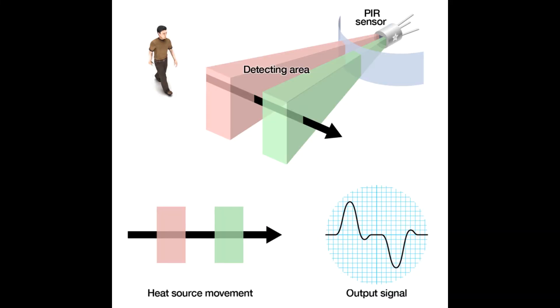A PIR sensor measures infrared light emitted from objects that generate heat and therefore infrared radiation in its field of view. It does not detect the radiation itself but actually the change that occurs when a target enters its field.